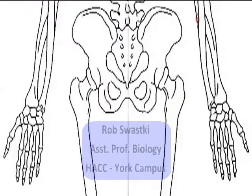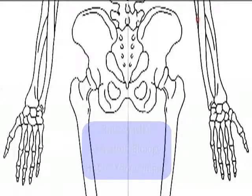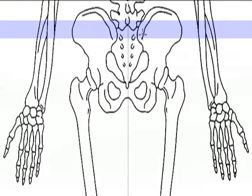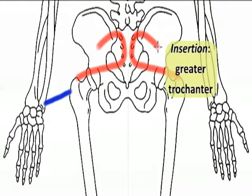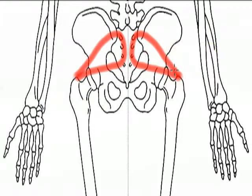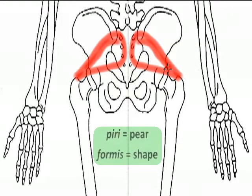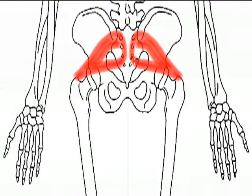Hello, this is Rob Swatsky from the York campus of Harrisburg Area Community College. In this podcast we're continuing our review of the muscles of the lower extremity. Our next muscle is the piriformis. The piriformis originates on the sacrum and inserts onto the greater trochanter of the femur. The name piriformis means pear shape, and that's a good way to remember this muscle amongst the others in this region because of this unique shape.